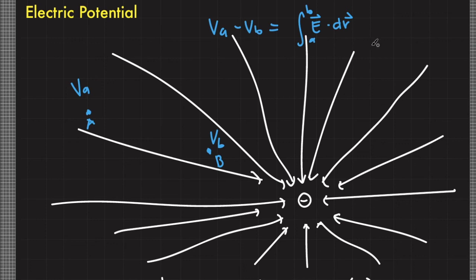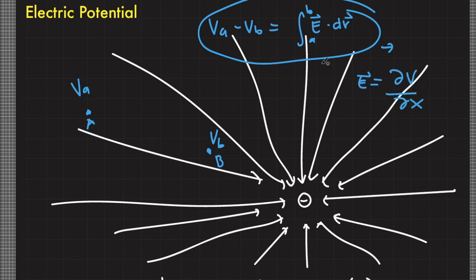Another thing to point out is that we can write the electric field in terms of the gradient of potential — there is an electric field where there is a gradient of potential. In electromagnetism, we handle many vector quantities, but with the introduction of electric potential, we can represent a very sophisticated system by simply assigning scalar values to each point in space, making it easier to calculate electrostatic quantities since electric potential is a scalar quantity.